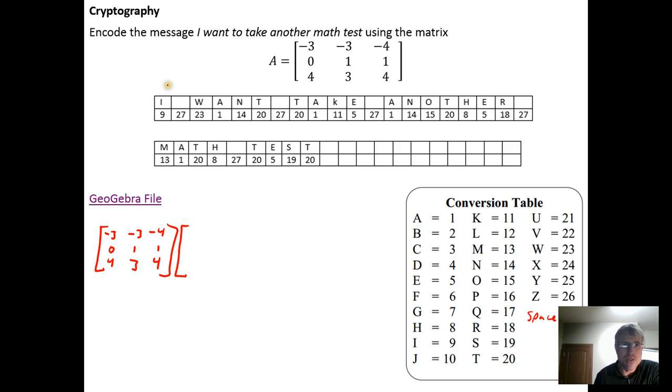So 9, 27, 23, we go 9, 27, 23, 1, 14, 20, 1, 14, 20, 27, 21, 27, 20, and 1, 11, 5, and 27, 11, 5, and 27, 11, 14, and 15, 11, 14, and 15. Any square encoding matrix will work for this. 28 and 5, 28 and 5, 18, 27, and 13, 18, 27, and 13, 20, 20, and 15, 19, 20, and 15, 19, 20. I have an extra spot so we'll just make that a 27 to fill out the matrix.